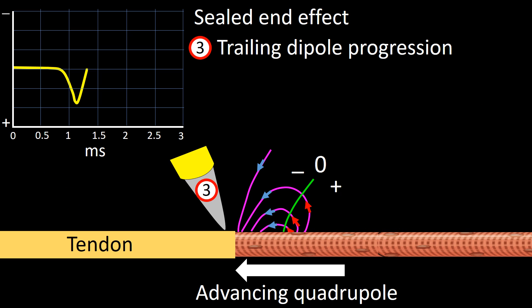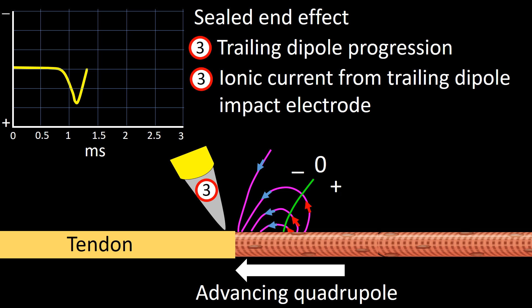Stage 3 is characterized by the trailing dipole progression to the tendon's edge. Thus, the ionic current from the trailing dipole impacts the electrode. At the display panel, the tracing goes up, reflecting the negative value of the advancing ionic current.